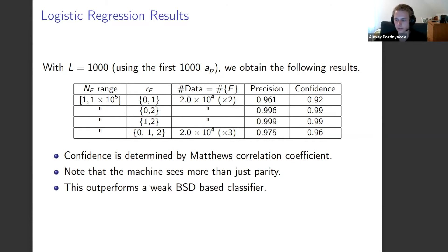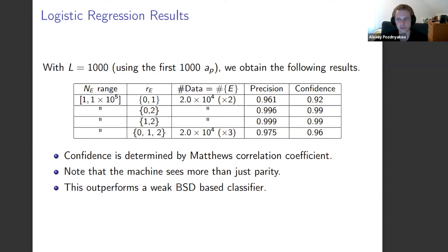In our main experiment, we took all elliptic curves with conductor between 1 and 100,000, with random samples of 20,000 curves of rank 0, rank 1, and rank 2. Logistic regression achieved 96.1% accuracy for rank 0 vs. rank 1, 99.6% for rank 0 vs. rank 2, 99.9% for rank 1 vs. rank 2, and 97.5% for a three-class classification. While not entirely surprising given BSD, these results show the machine sees more than just parity of rank, since it distinguishes rank 0 from rank 2 simultaneously with rank 1.